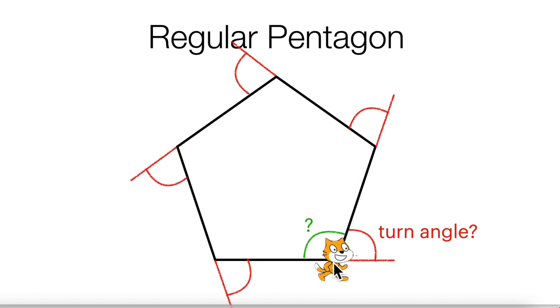So actually, the cat has to go through a total of five identical turn angles in order to draw this regular pentagon. So this is the first turn angle. And then it moves 100 steps to the second vertex. And then it turns again at the same turn angle and moves to the next vertex. And then it turns again and moves to here.